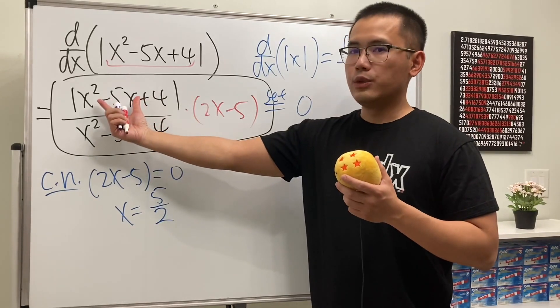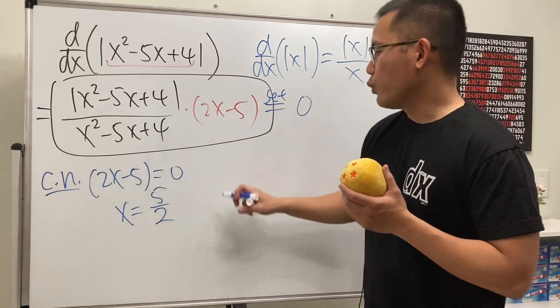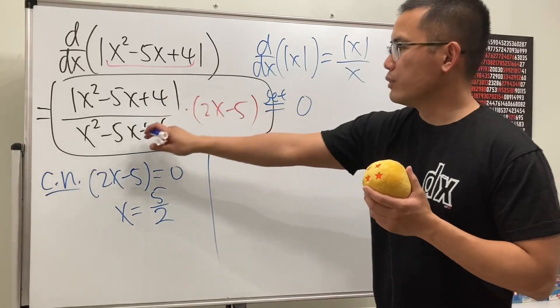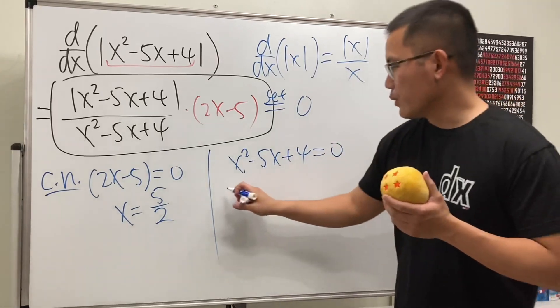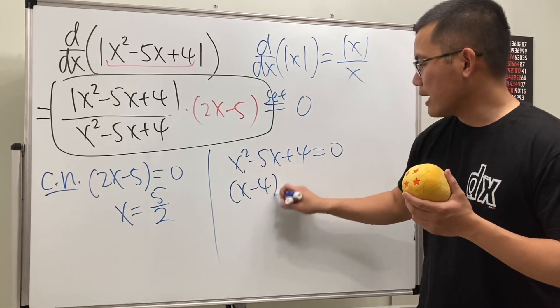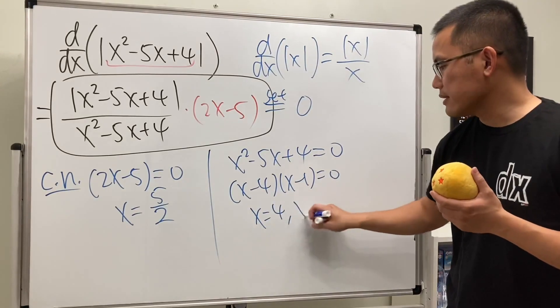And the reason I didn't say this is equal to 0 is because this is actually where the derivative does not exist. So for the non-existent case, we will have to look at the bottom equal to 0. And then we will get x minus 4 times x minus 1 equal to 0. That means x is equal to 4, and x is equal to 1.